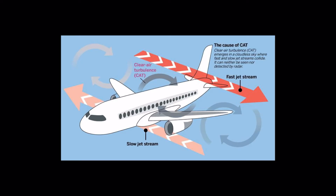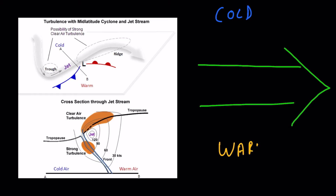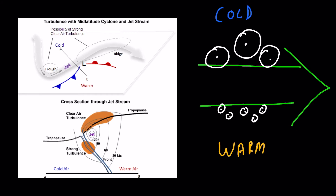Not all jet streams have clear air turbulence associated with them. Clear air turbulence occurs around the boundaries of jet streams because of wind shears, and it is strongest near or just below the jet axis on the cold side of a jet stream. This is because on the cold side the air molecules are larger — cold air is thicker — so when high speed wind moves these larger air molecules, a lot of turbulence is created in the surrounding area.